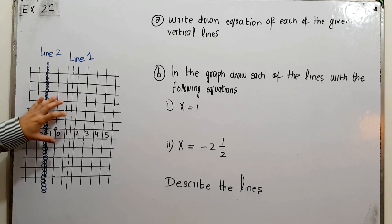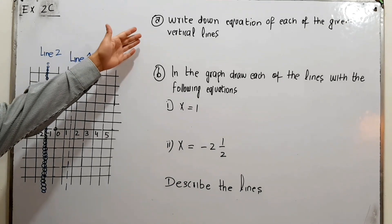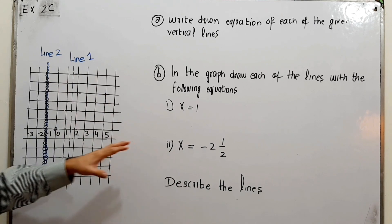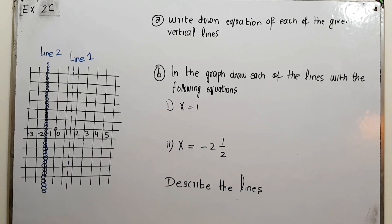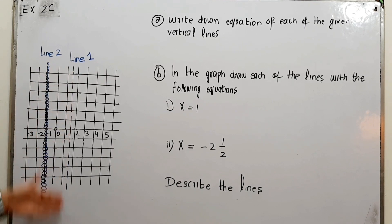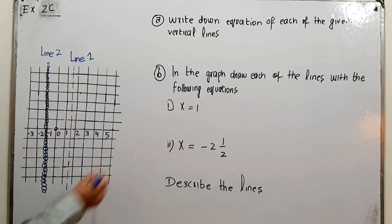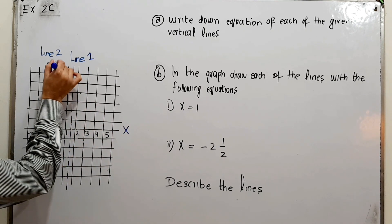We have been given this graph in the book with line one and line two. Part A asks us to write down the equation of each of the vertical lines. On a vertical line, this is the x-axis and this is the y-axis, and this is your origin.